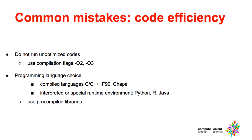Currently there are many attempts at building an efficient Python compiler, but things are not yet where we would like them to be. So please study the performance of your code and all available options before you decide to run at large scale on a high-performance computing system. The same applies to R and Java languages — their performance is well below a comparable C, C++, or Fortran code.